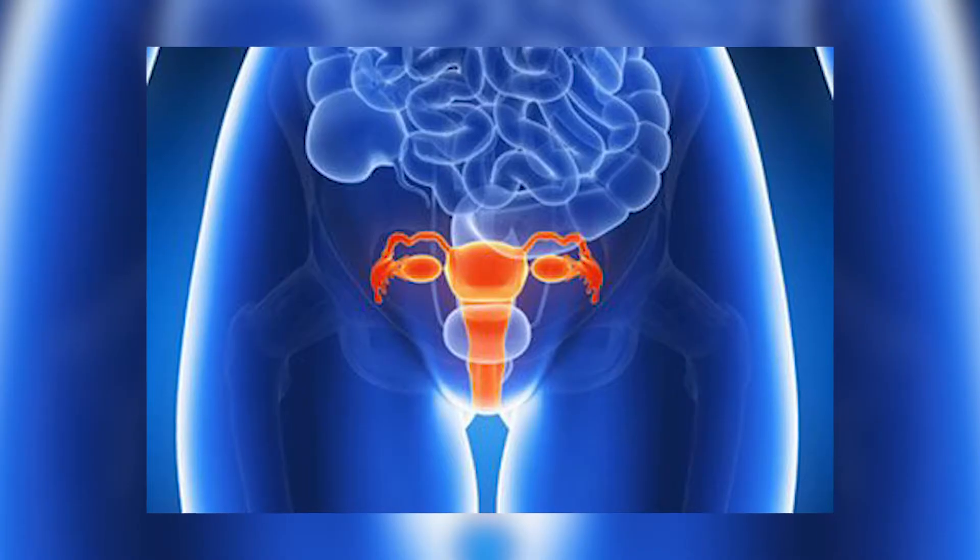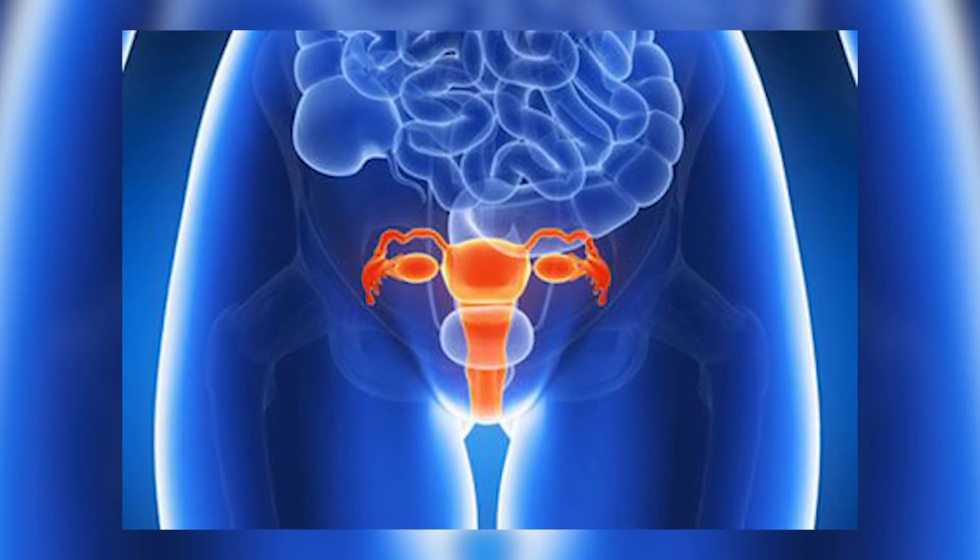Normally the egg joins the sperm in the fallopian tube for fertilization to happen, and the fertilized egg then continues to the uterus. However, the fallopian tubes are extremely fragile. If they are blocked, there is no way the egg will become fertilized by the sperm. If the tubes are damaged, there will be no way for the sperm to fertilize the egg. Other issues can also affect fallopian tubes — diseases such as endometriosis, pelvic inflammatory disease, infections, and even sexually transmitted diseases can cause a blockage to your fallopian tubes.